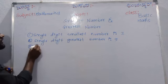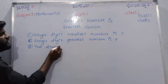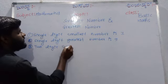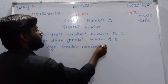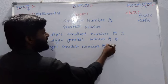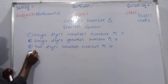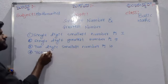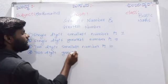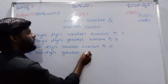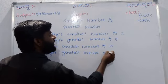Third one, two digit smallest number is 10. Fourth, two digit greatest number is 99.